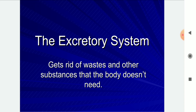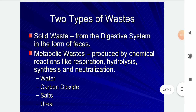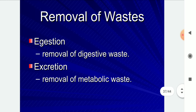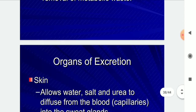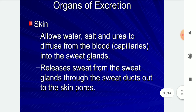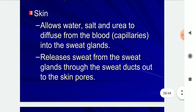The excretory system gets rid of waste and other substances the body does not need. There are two types of waste: solid waste from the digestive system, and metabolic waste produced by chemical reactions like respiration, hydrolysis, synthesis, and neutralization — including water, carbon dioxide, salts, and urea. Excretion is the removal of metabolic waste, while egestion is the removal of digestive waste. The skin allows water, salt, and urea to diffuse from blood capillaries into sweat glands, releasing sweat through sweat ducts out through the skin's pores.